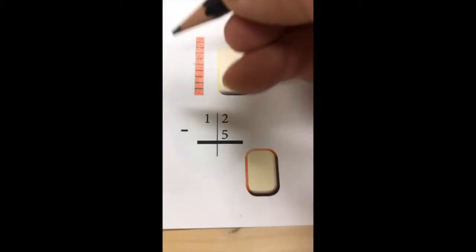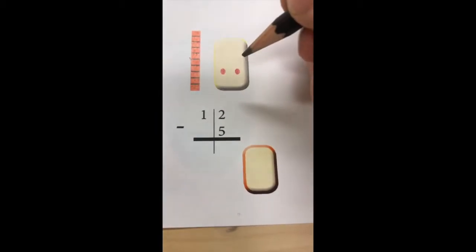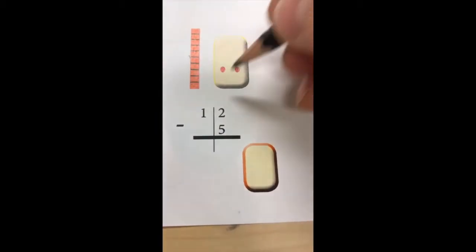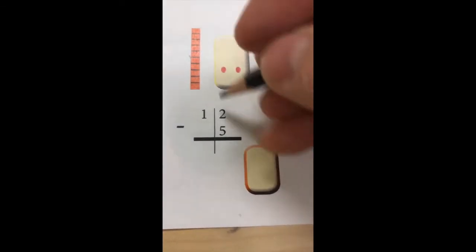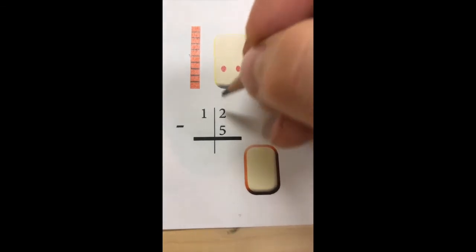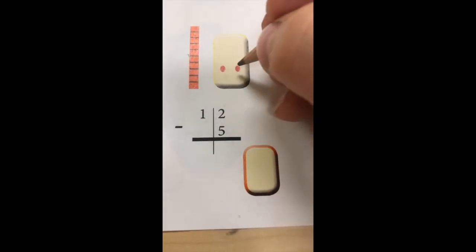Here's the same problem. I'm going to attack it with a semi-concrete model. So we have one 10 stick and two ones, 12, and we're going to try to subtract 5. The first thing I need to do is acknowledge that I can't get 5 away from these two red ones.